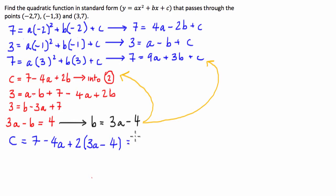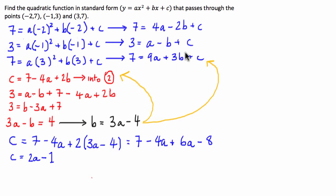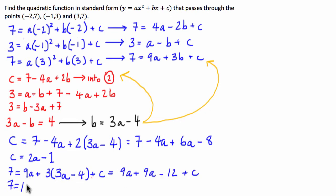Expanding that out: c = 7 - 4a + 6a - 8. Combining like terms, -4a + 6a = 2a and 7 - 8 = -1, so c = 2a - 1. We're also going to substitute b = 3a - 4 into equation 3: 7 = 9a + 3(3a - 4) + c, giving us 7 = 18a - 12 + c. Moving the 12 to the other side: 7 + 12 = 19 = 18a + c.